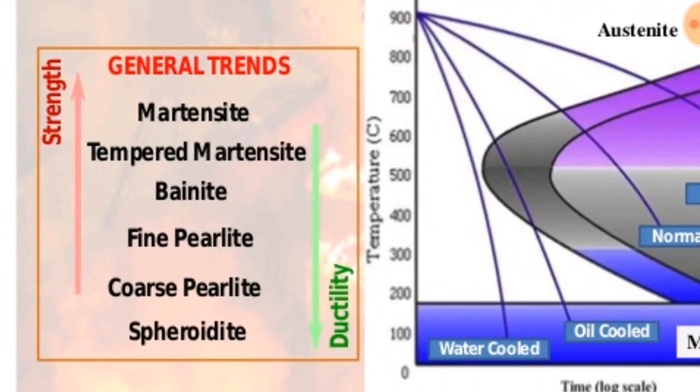As strength increases, ductility decreases. Strength is inversely proportional to ductility. Strength increases from spheroidite, coarse perlite, fine perlite, bainite, tempered martensite, to martensite.